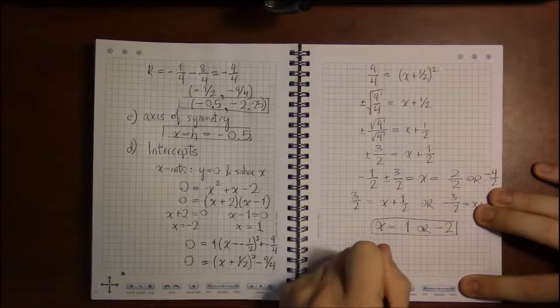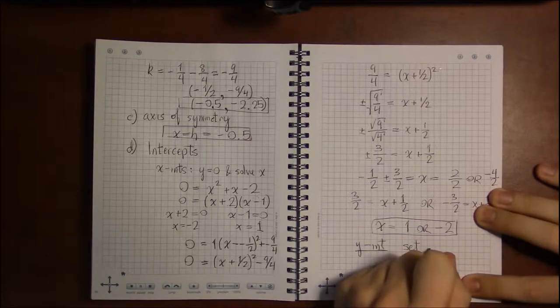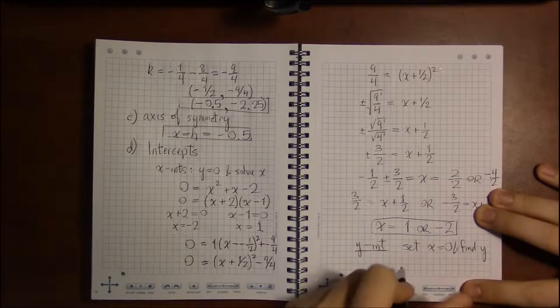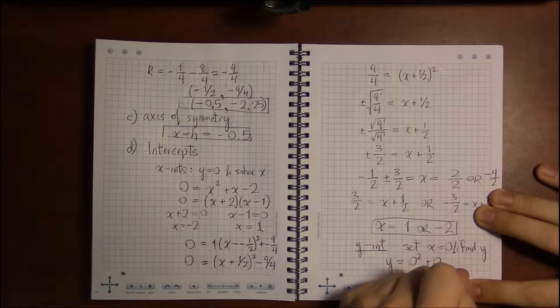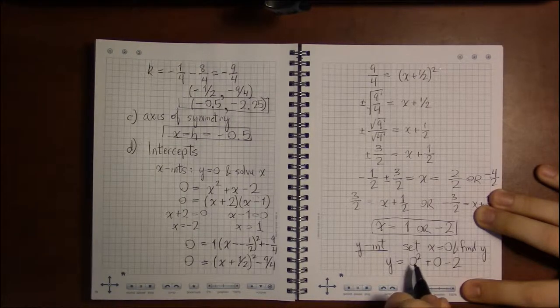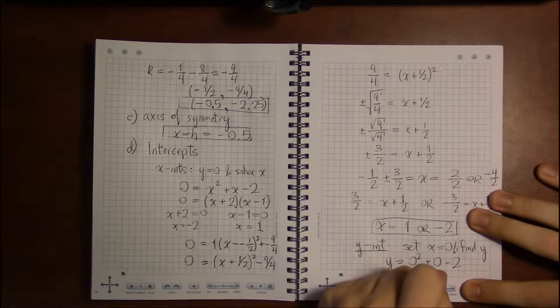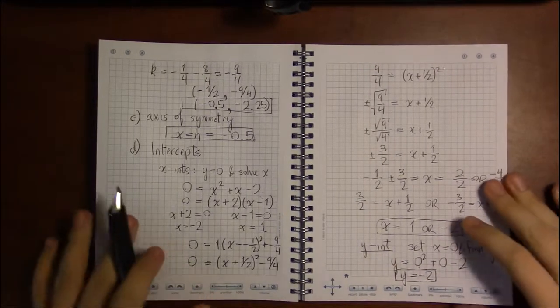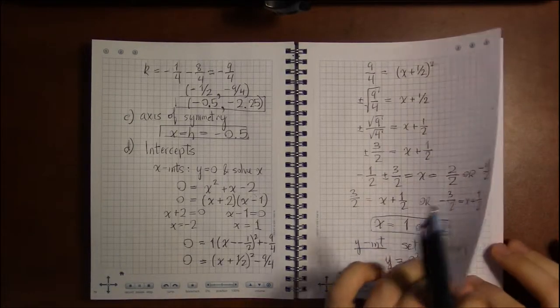For y-intercepts, stick with the standard form because we're just going to set x equal to 0 and find y. So, we have y equals 0 squared plus 0 minus 2. 0 squared is 0. 0 plus 0 is 0. 0 minus 2 is simply minus 2. So, that is our y-intercept. That's where this graph hits the y-axis.